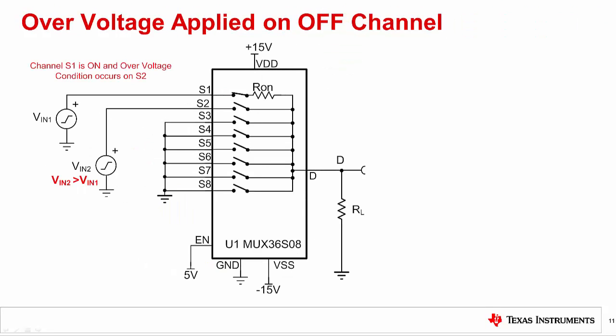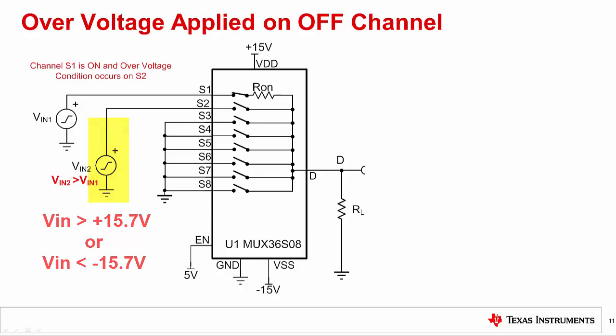Here we consider how overstress on an off channel will impact the signal passed through the on channel. Multiplexer input channels can be interfaced with various sensors, and it is possible that the selected channel may have an input voltage within the multiplexer datasheet limitations, while an overvoltage is applied to a channel that is not selected. In this diagram, channel 1 is selected and channel 2 is off. The input on channel 1 is inside the absolute maximum ratings, but an overvoltage condition appears on channel S2. Besides potentially damaging the device, the overvoltage on the off channel can feed through to the output, corrupting the expected output signal.